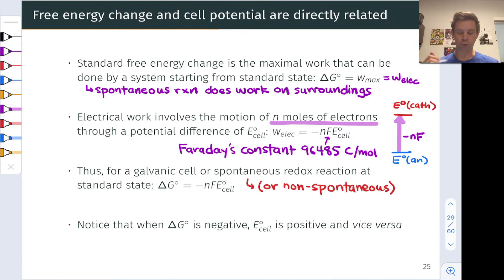This also works for non-spontaneous redox reactions. However, in that case, ΔG will be positive and E°_cell will be negative as a result of this negative sign. So this equation applies whether the redox reaction is spontaneous or non-spontaneous, and we're going to take advantage of that when we calculate cell potentials for hypothetical galvanic cells to appreciate whether a given redox reaction will be spontaneous or non-spontaneous.